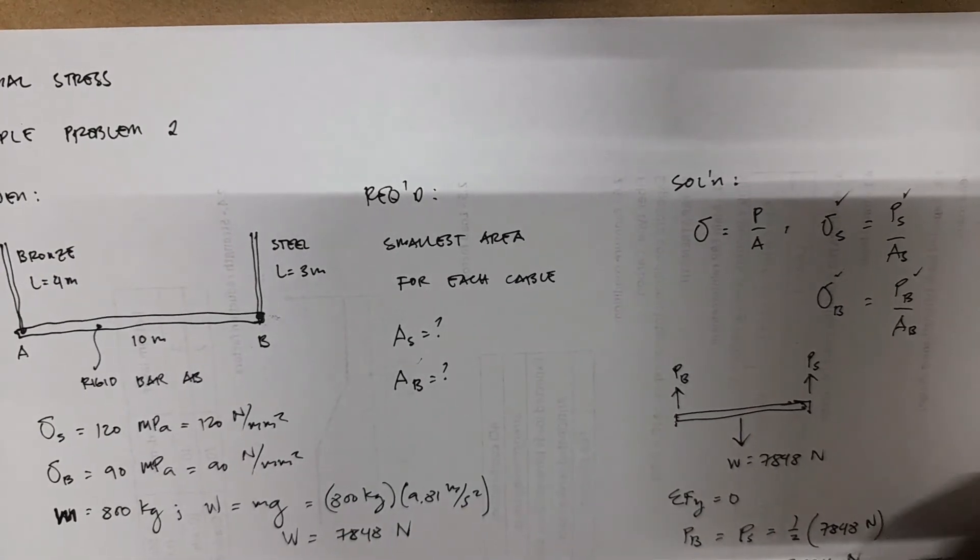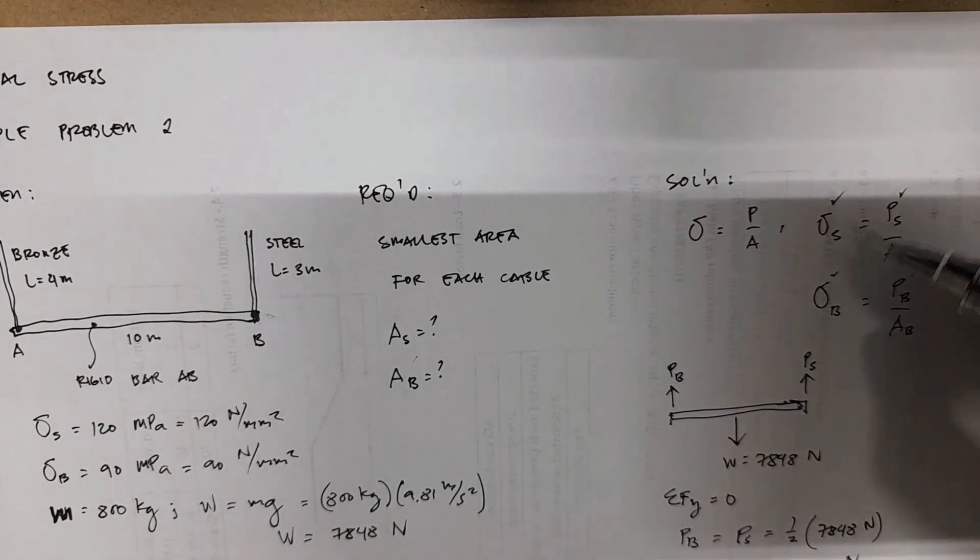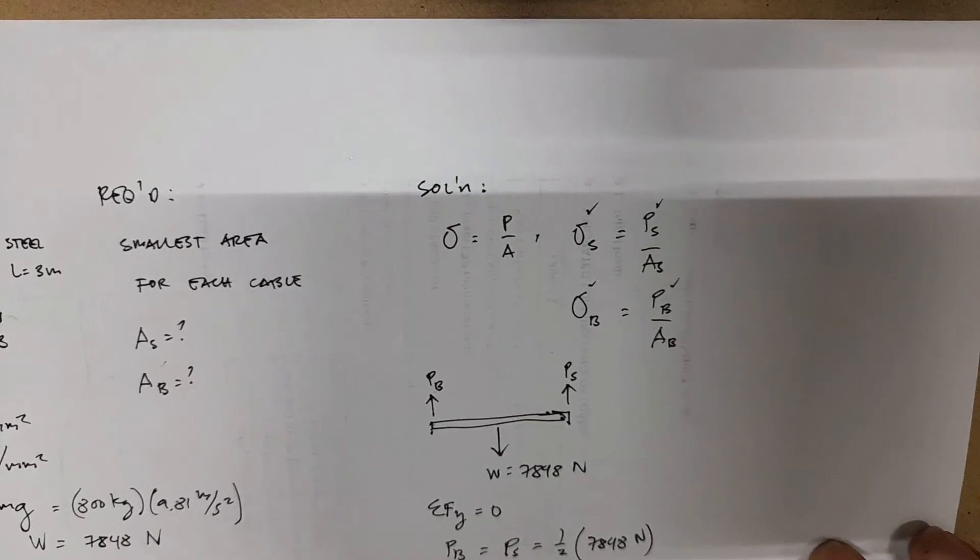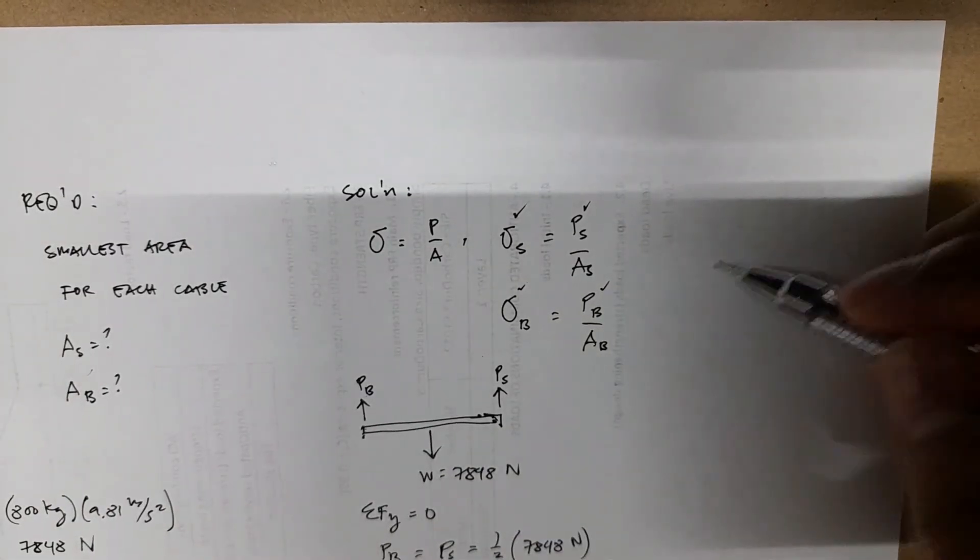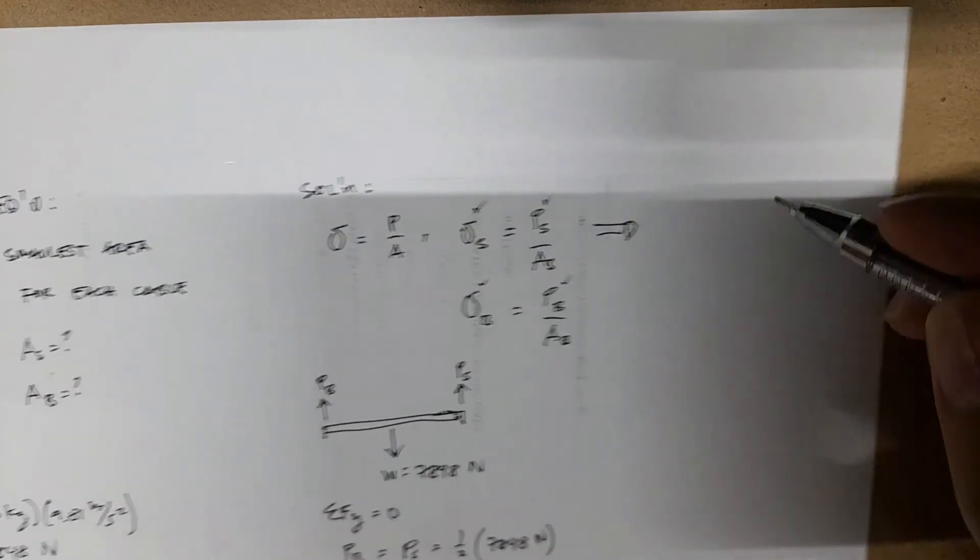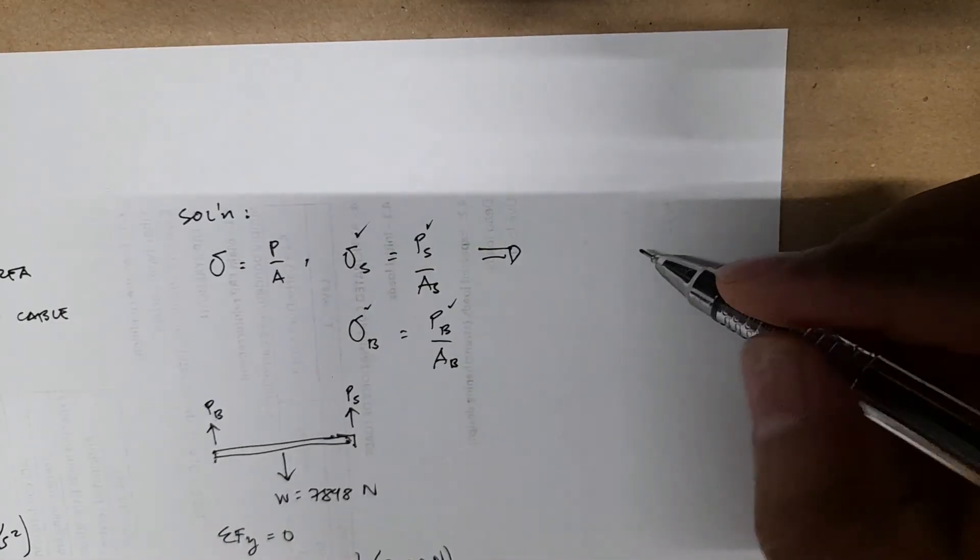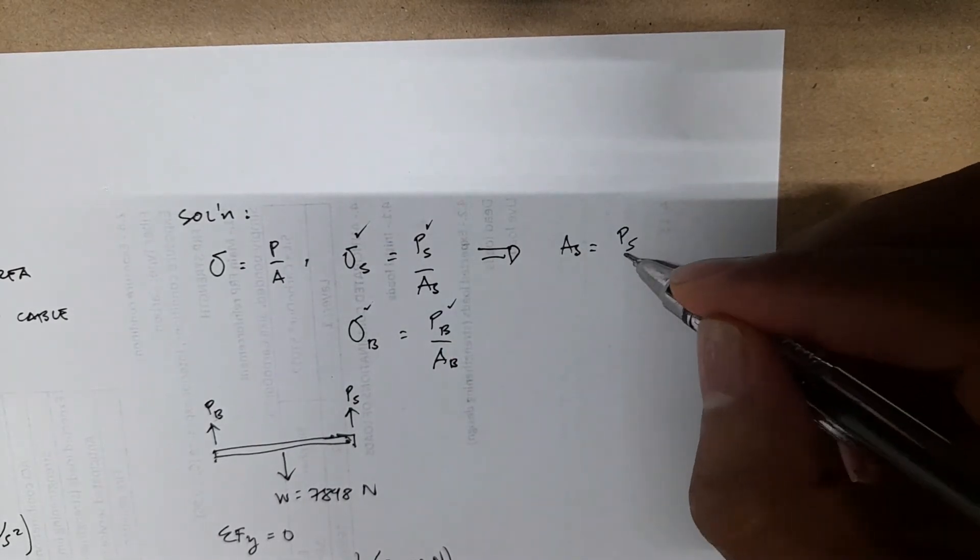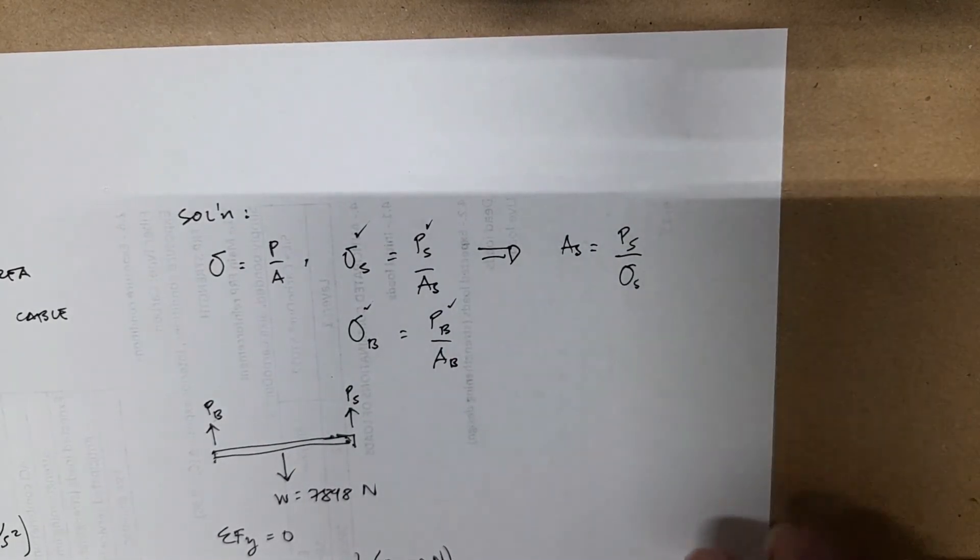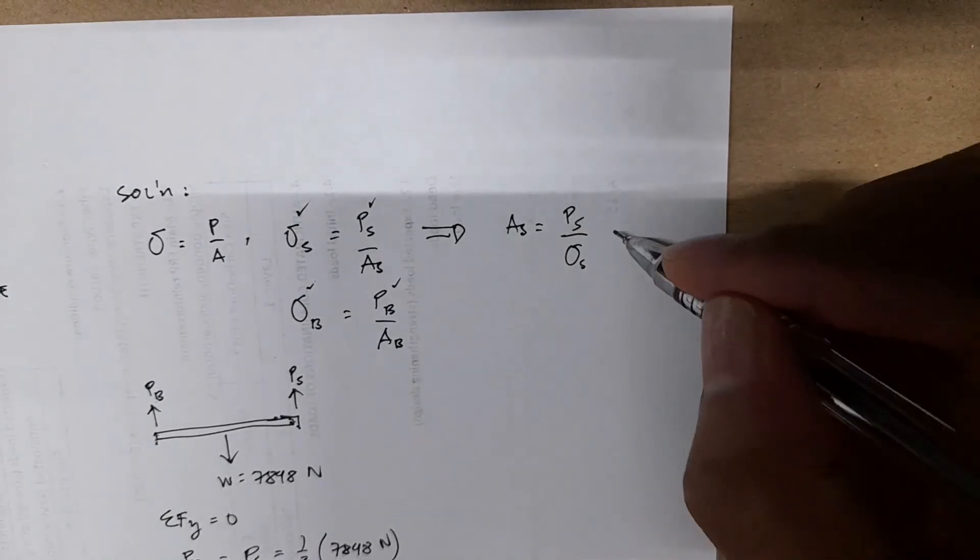Then substituting the values for PB and PS in your original equation, we can now have for area S. So this one becomes AS just equal to PS over sigma S.